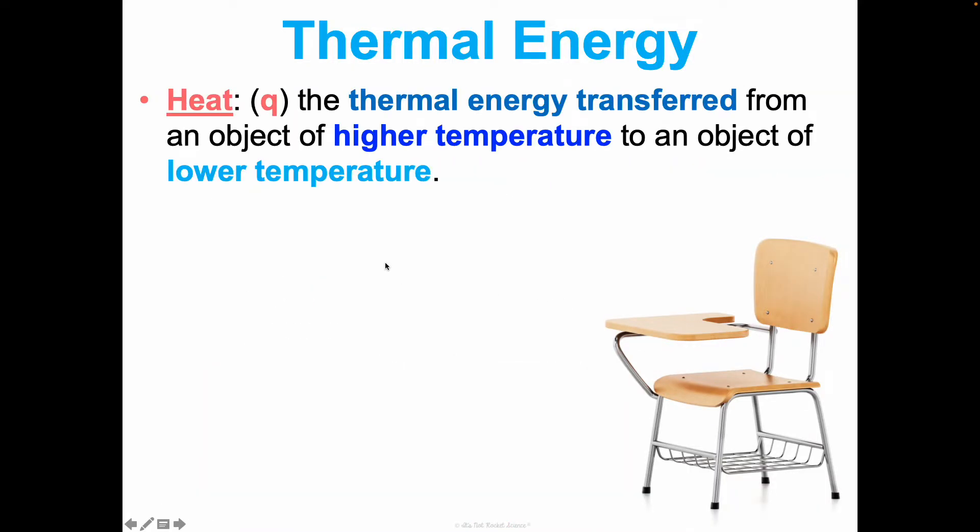Let's talk more about thermal energy. Let's really define heat. Heat is represented by a lowercase Q and it's the thermal energy that gets transferred from an object of higher temperature to an object of lower temperature. Heat always moves from high to low. I have a picture of a little desk here because you may have noticed when you sat in your desk at the beginning of the day that your seat felt cold. As the class period goes on, your seat warms up because heat leaves your body, which is a higher temperature, and goes into the chair, which is a lower temperature. That's how heat gets transferred from high temp to low temp.